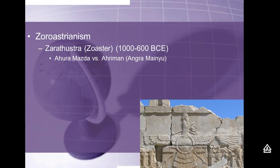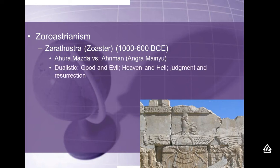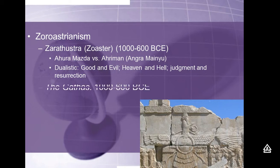Sound familiar? It should. This is one of those foundational belief systems that influences much of Western civilization. We call this a dualistic religion — good versus evil. There's a heaven and a hell, a judgment for all souls, and resurrection for the good people into heaven at the end of this lifetime. Some of these beliefs will crop up in other major world religions that are the heirs to Zoroastrianism.